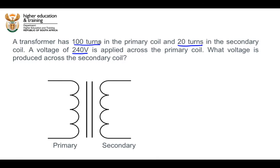Firstly, there are 100 turns in the primary coil. So NP is equal to 100 and there are 20 turns in the secondary coil. So NS is equal to 20. They've also told us that a voltage of 240 volts is applied across the primary coil. So VP is equal to 240 volts and we need to find the value of VS or the voltage across the secondary coil.